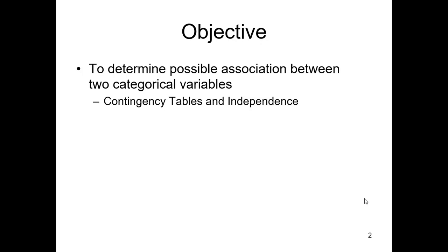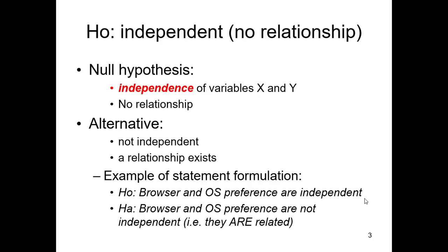Like I said marketing, politics, polling, huge in this. So we have a hypothesis, six steps like we always do. Simply the two variables, name them, are independent versus the two variables not independent. Remember mutually exclusive. For instance, browser and operating system preference. They're independent or browser and operating system are not independent.